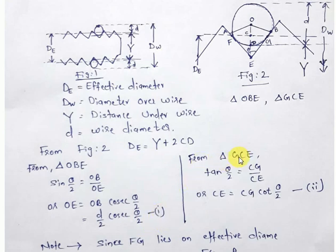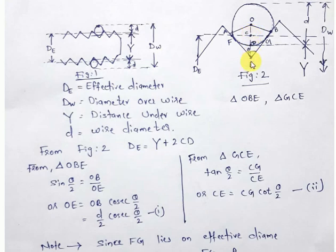Similarly, from triangle GCE, the angle at C is 90 degrees and EG is the hypotenuse. Taking tan(theta/2) = sin(theta)/cos(theta), we get CG/CE = tan(theta/2), so CE = CG · cot(theta/2). Mark this as Equation 2. We need CE ultimately to find CD.